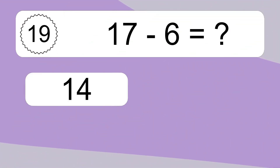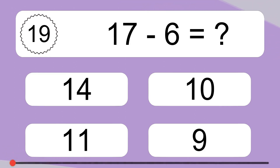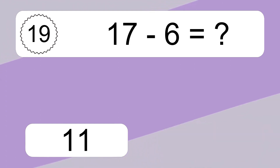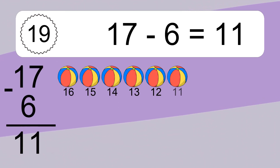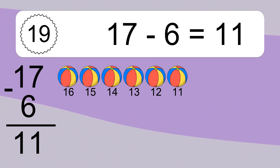17 minus 6 equals what? 17 minus 6 equals 11. Let's count it: 16, 15, 14, 13, 12, 11.